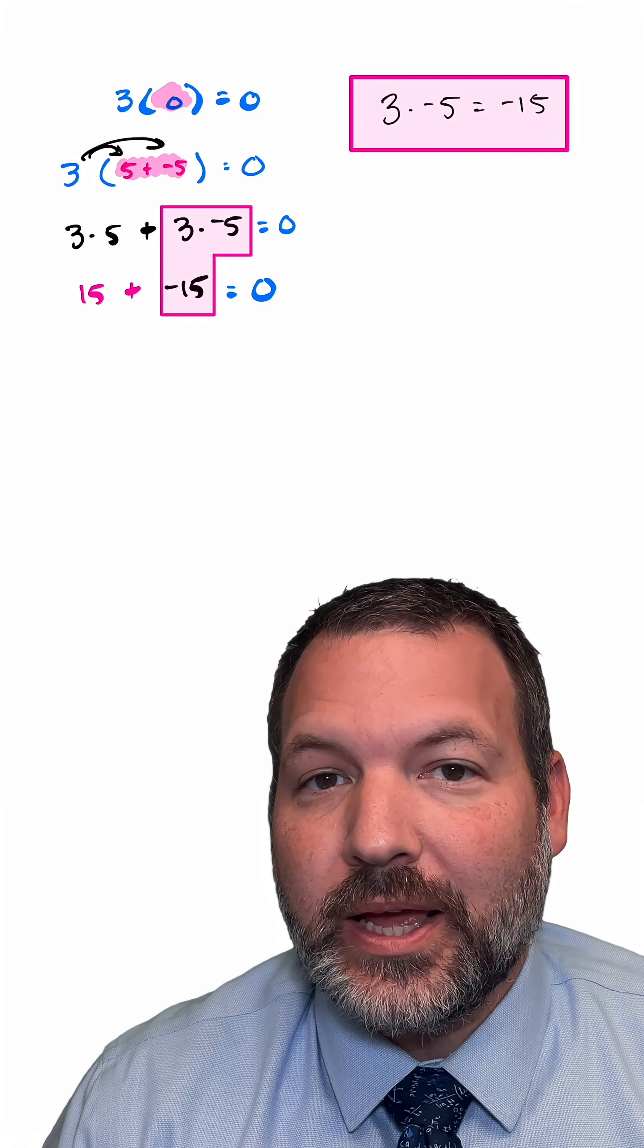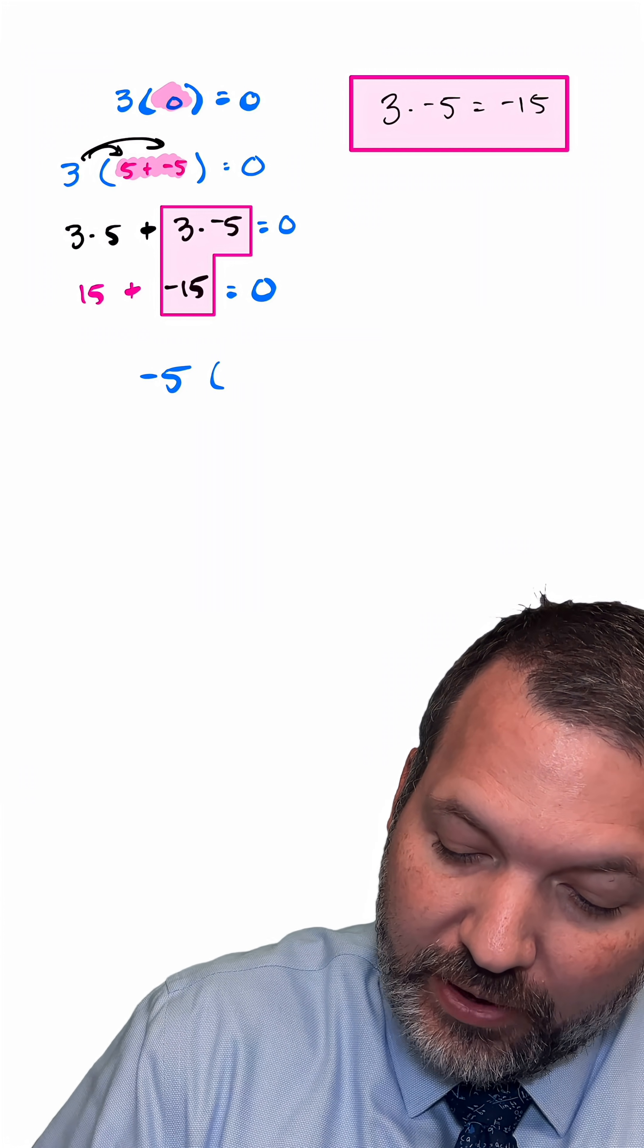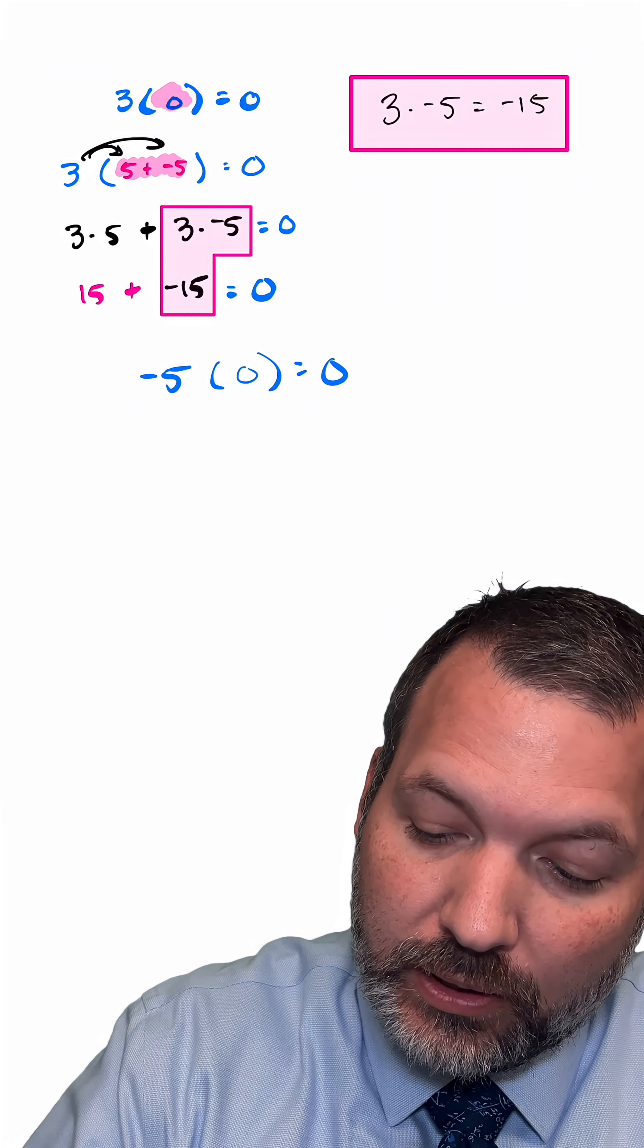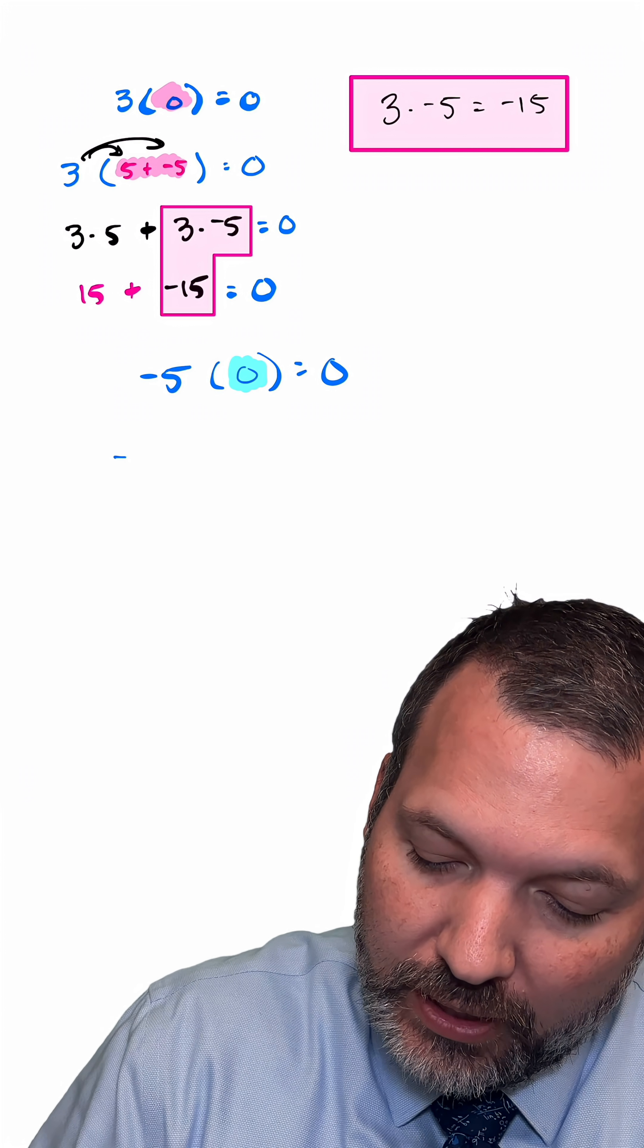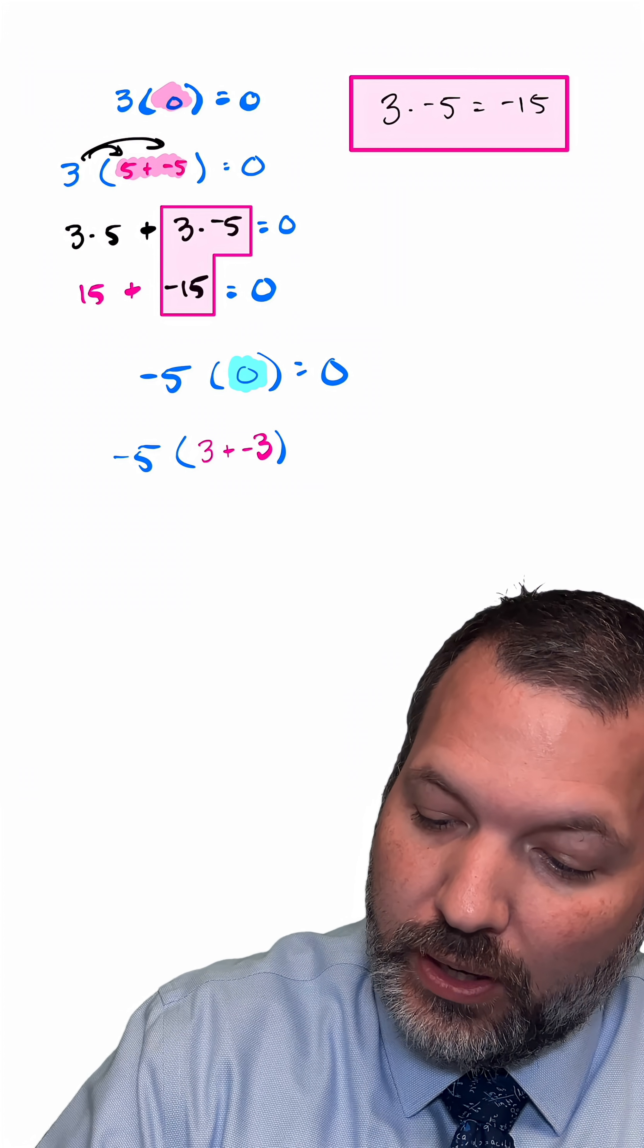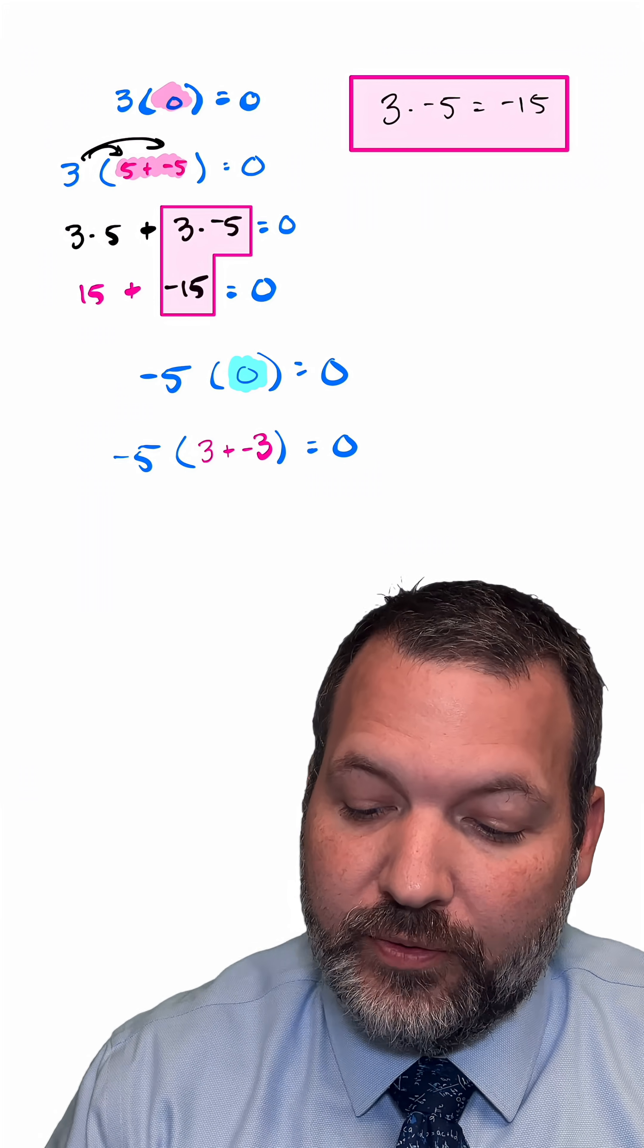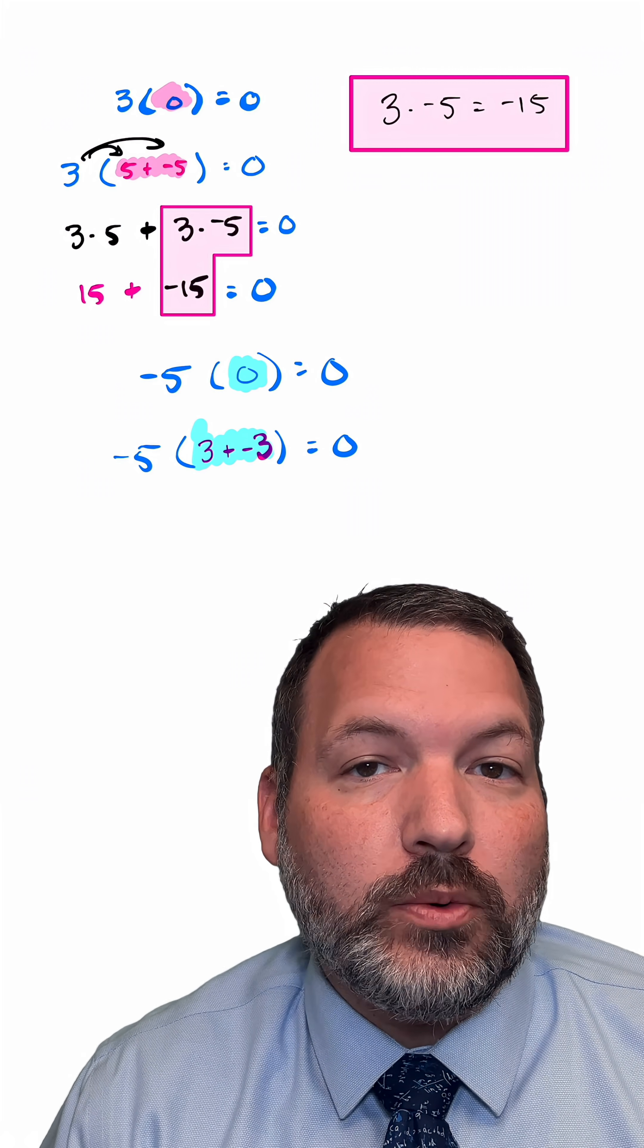Now that we know that, let's consider a slightly different problem. Let's say that we want to multiply negative 5 times 0. What should the answer to that be? 0. But again, let's go ahead and take the inside of those parentheses, that 0, and let's rewrite that. This is now going to be negative 5 times 3 plus negative 3. Again, as long as you agree 3 plus negative 3 is 0, then you can see we haven't really changed anything. These two values are equal, and so everything still equals 0.